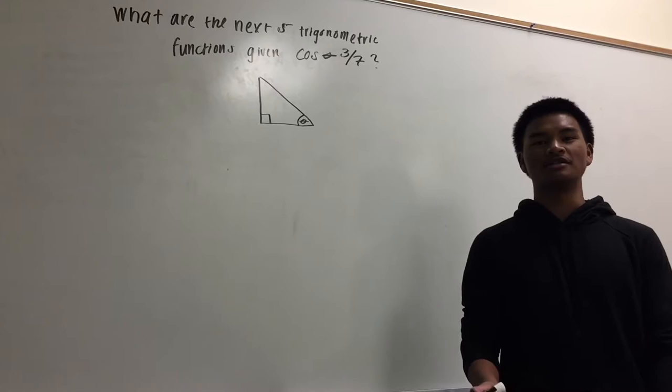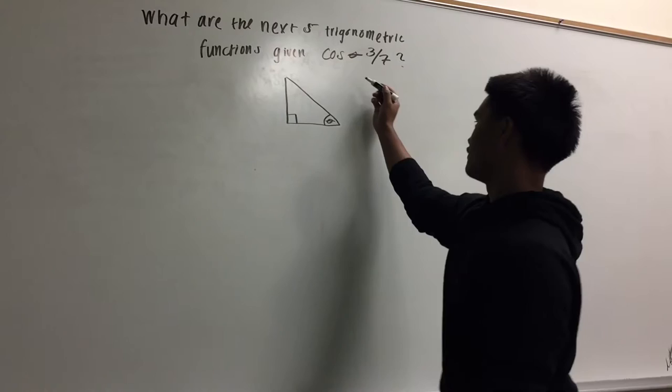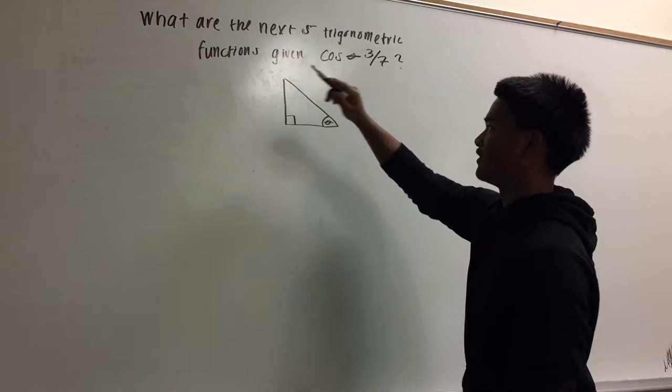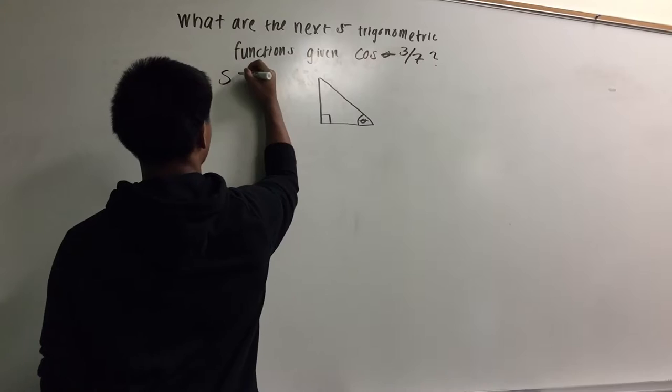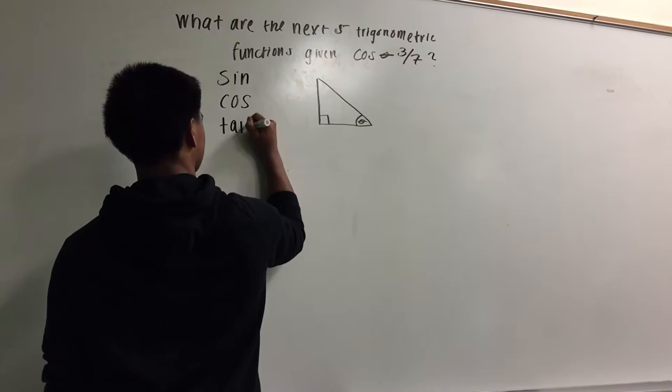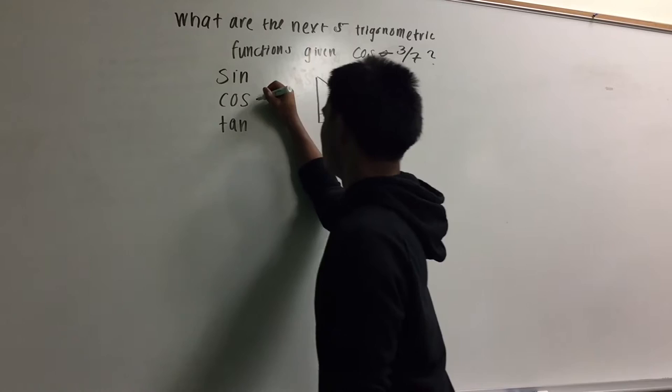Okay, so for this next problem, we're going to teach you how to rationalize your answers. So, basically what we have here is cosine theta 3 over 7. What is cosine 3 over 7, and finding the next 5 trigonometric functions. So, basically what we're going to do is the same thing that we did for the previous question. So, we're going to write down sine, cosine, and tangent. So, right here, cosine is already a given.